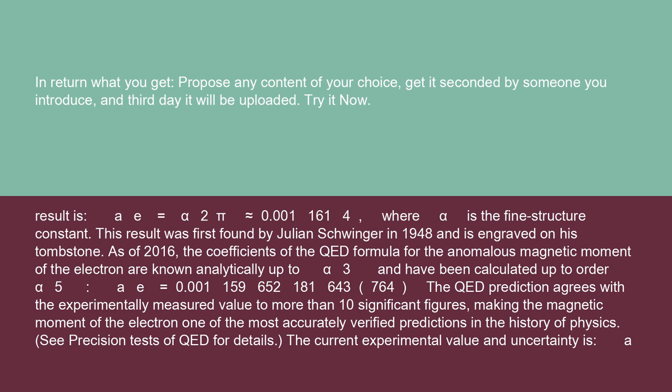The QED prediction agrees with the experimentally measured value to more than 10 significant figures, making the magnetic moment of the electron one of the most accurately verified predictions in the history of physics. See precision tests of QED for details.